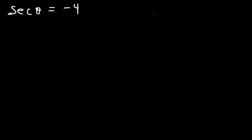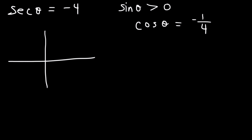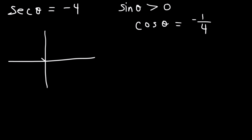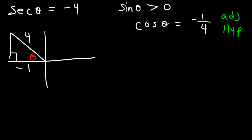Here's another one. Let's say that secant is equal to negative 4, and sine is greater than 0. Go ahead and find the other five trigonometric functions. Now secant is 1 over cosine, so if secant is negative 4, cosine is negative 1 over 4. Cosine is negative in quadrants 2 and 3. Sine is positive in quadrants 1 and 2. So we need to draw the triangle in quadrant 2. Now let's find the missing side.